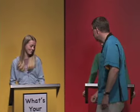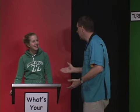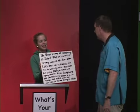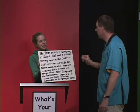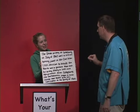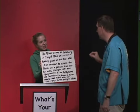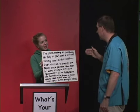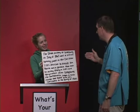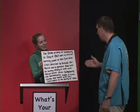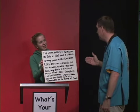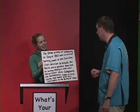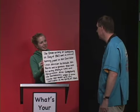Very good. Scholar number three, what's your point? The Union victory at Gettysburg in July of 1863 was a critical turning point in the Civil War. Lee's decision to invade the North was a gamble that cost his army dearly in lives and equipment. After Gettysburg, the Confederates began a slow retreat that ended with Lee's surrender in the spring of 1865.